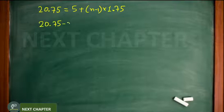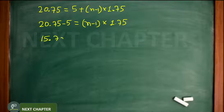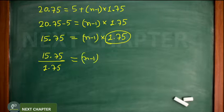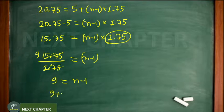If you shift 5, the value becomes 20.75 minus 5 equals n minus 1 multiplied with 1.75. If I subtract 5 from 20.75, the value is 15.75, which equals n minus 1 multiplied with 1.75. Since 1.75 is in multiplication, it will go to division. So 15.75 divided by 1.75, when you calculate this, the value comes to 9. So 9 equals n minus 1.